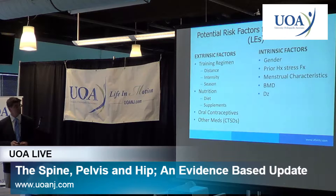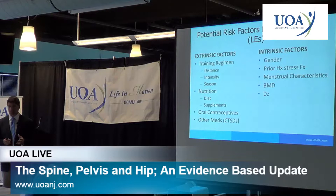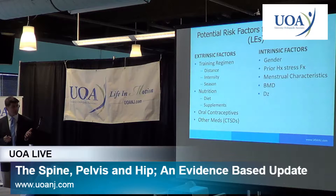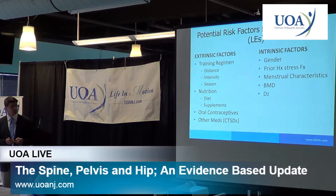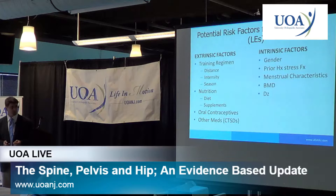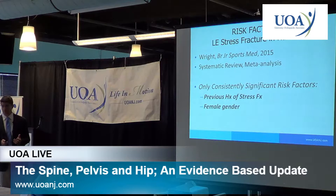Risk factors for stress fractures can be divided into intrinsic and extrinsic. Extrinsic — potentially modifiable — include training regimen, distance, intensity, season, running surface, sneakers, nutrition, supplements, oral contraceptives, and corticosteroids. Intrinsic factors include gender, prior history of stress fracture, menstrual characteristics, bone mineral density, and other diseases. But which ones really make a difference? Rizzoni's meta-analysis and systematic review found only two fully documented risk factors: prior history of a stress fracture and female gender.